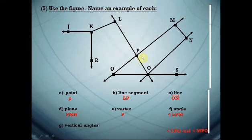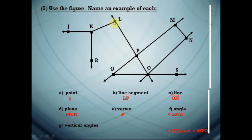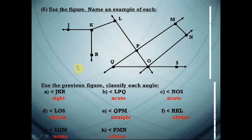Vertical angles are two angles opposite each other. For example, angle LPM and angle QPO are vertical angles. Or angle LPQ and angle MPO are also vertical angles.